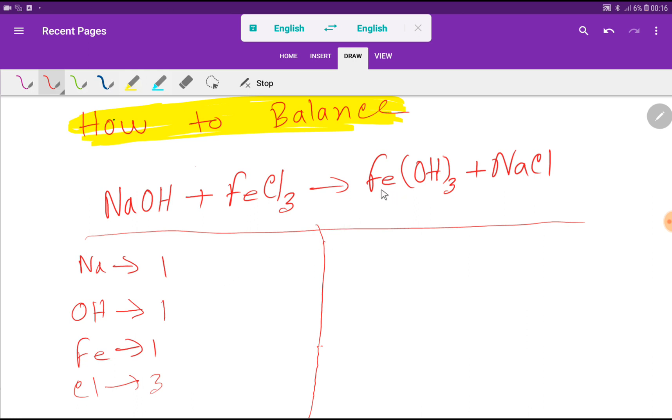In the right hand side we have 1 iron. Here we have 3 hydroxide and here we have 1 sodium and here we have 1 chlorine.